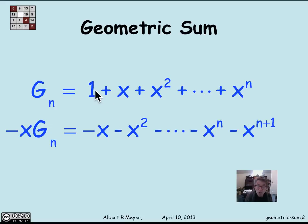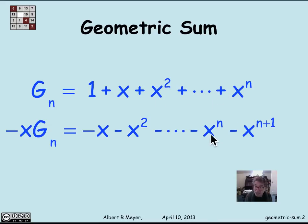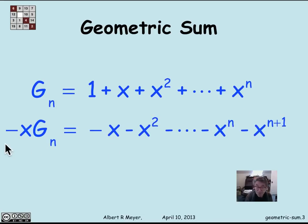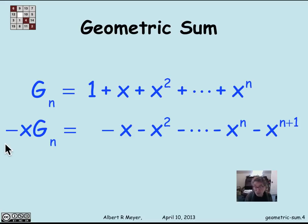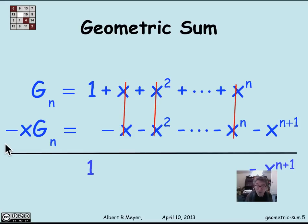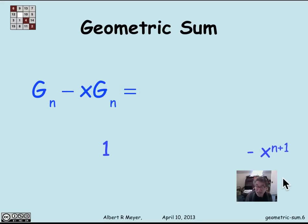There's x times g_n. So 1 times x gives minus x. x times x is x squared, and subtracting down through x to the n minus 1 times x gives the x to the n term. And finally, there's an extra term from right-shifting x to the n, giving x to the n plus 1. Now let's do this subtraction, lining up the terms so that they're easy to subtract. All the terms in the middle cancel, and we've figured out that g_n minus x times g_n equals 1 minus x to the n plus 1.